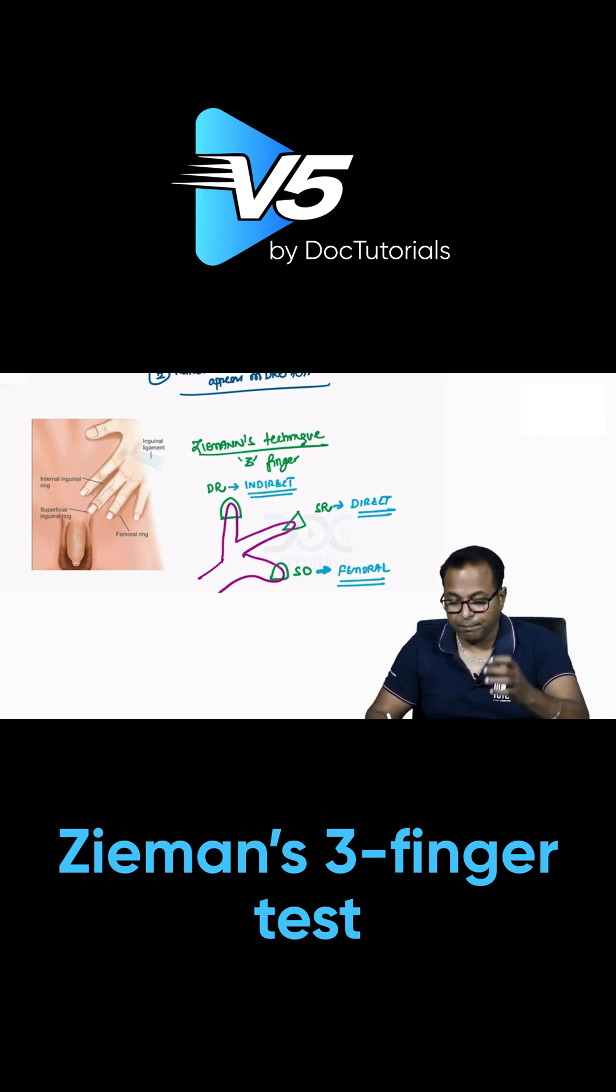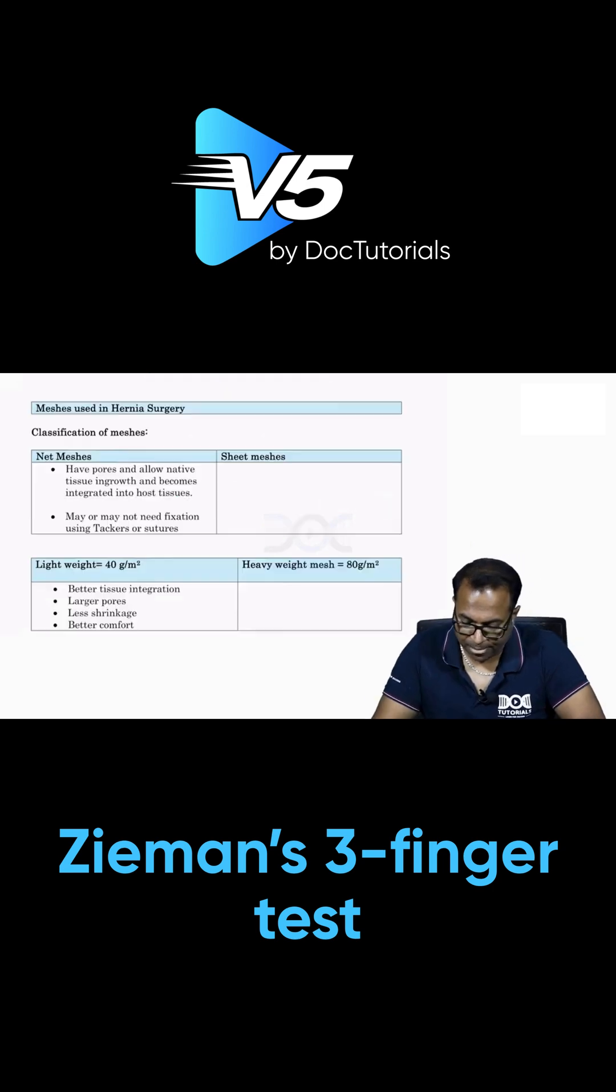So don't forget these three hernias: indirect, direct, and femoral. According to the impulse, we have three different hernias. This is a very basic three-test system. Don't forget the deep ring occlusion test, finger invagination test, and Zieman's clinical test used in hernias.